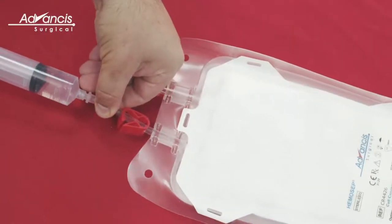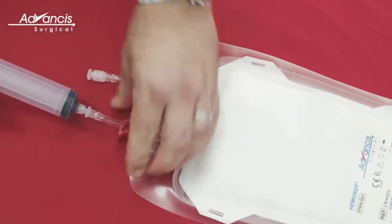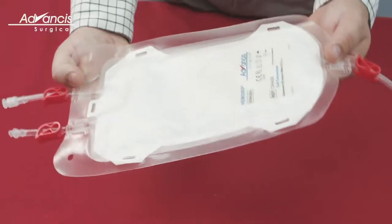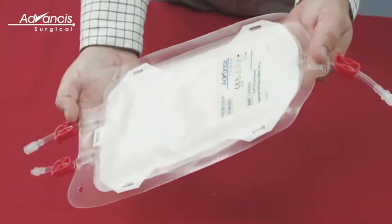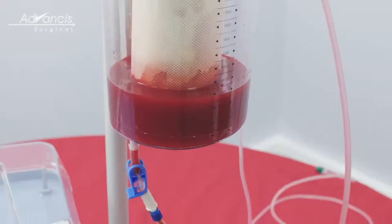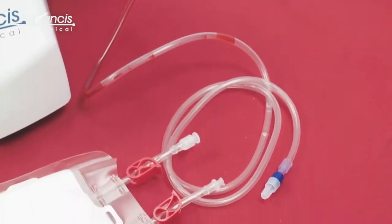Prime the Hemosep cell concentrator bag with 100 milliliters of normal saline and close the clamp. Gently rock the bag to ensure the membrane is completely wet and the fluid is absorbed into the center of the bag. Blood must be added to the bag for processing within three minutes of priming with the saline.